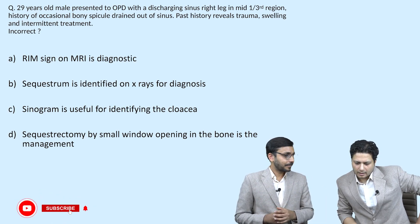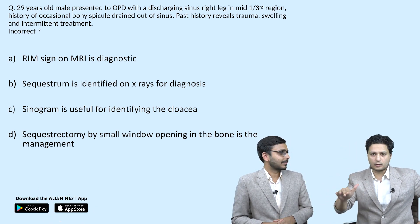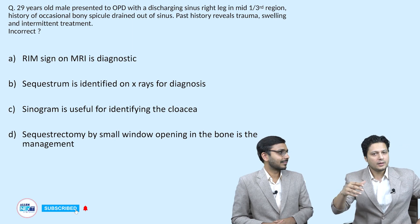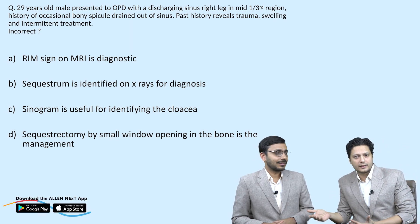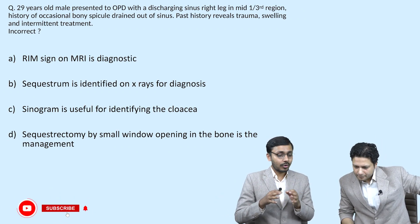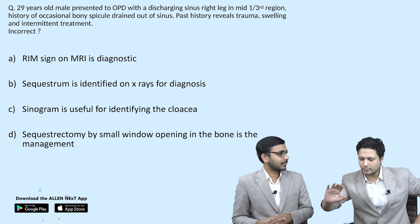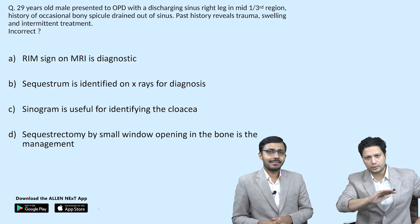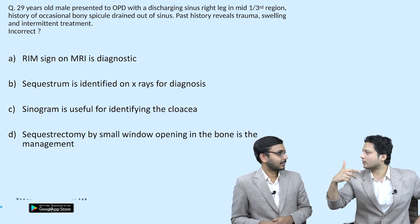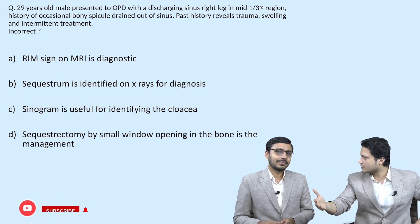Dissecting the question: there is a history of a draining sinus with bony spicules coming out — these two findings together are very specific for chronic osteomyelitis. The past history of trauma and intermittent or incomplete treatment is always provided in chronic osteomyelitis questions, because every acute osteomyelitis that is inappropriately managed will be converted into chronic osteomyelitis.